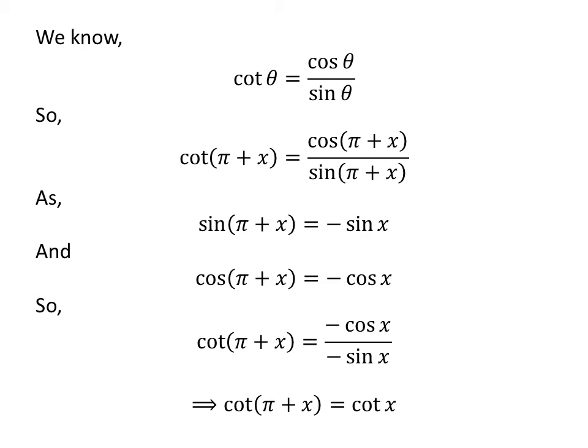Cancelling out the minus sign in the numerator and the denominator gives us cotangent of pi plus x is equal to cosine of x upon sine of x, which is equal to cotangent of x. So cotangent of pi plus x is equal to cotangent of x.